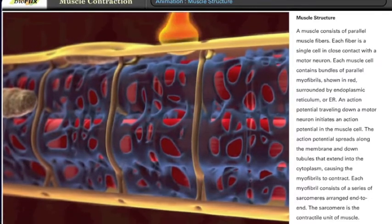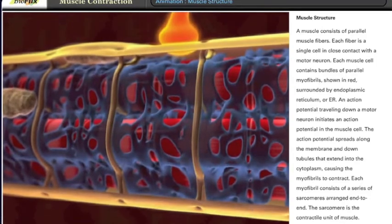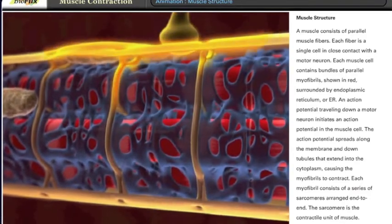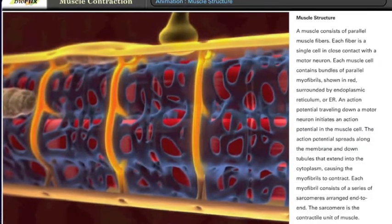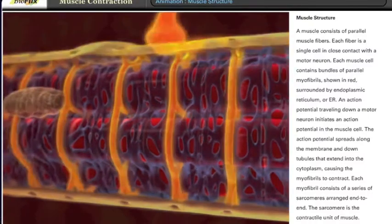An action potential traveling down a motor neuron initiates an action potential in the muscle cell. The action potential spreads along the membrane and down tubules that extend into the cytoplasm, causing the myofibrils to contract.